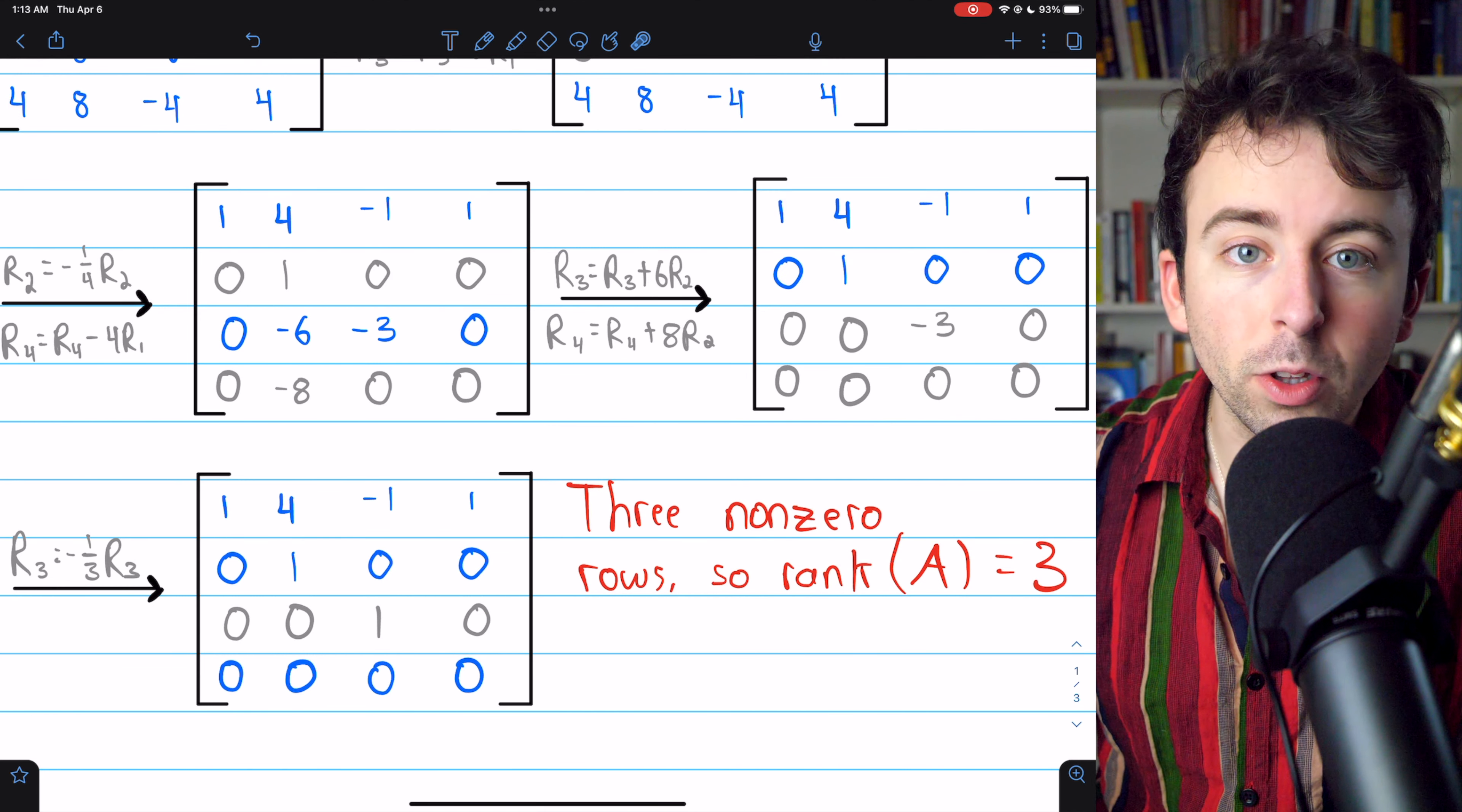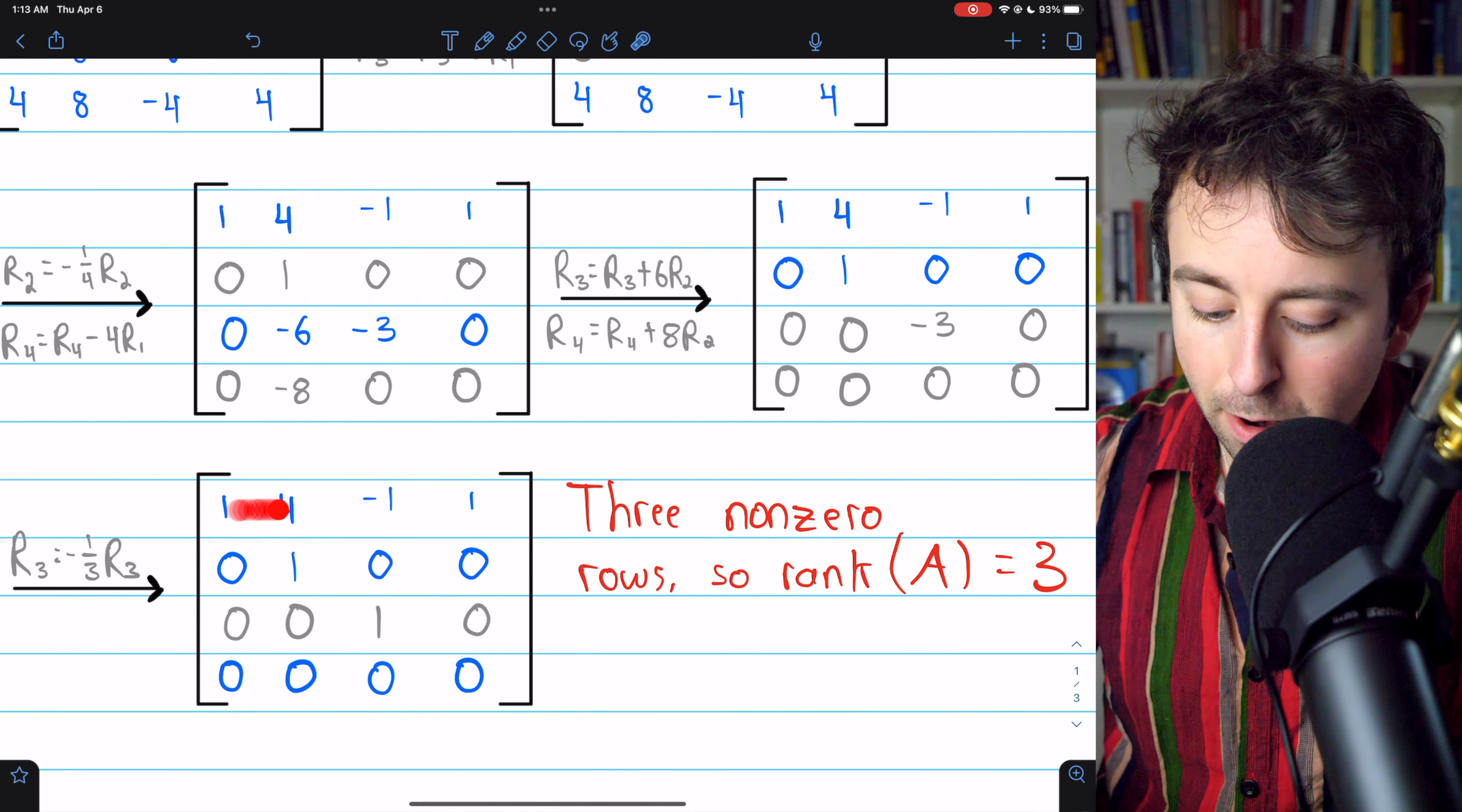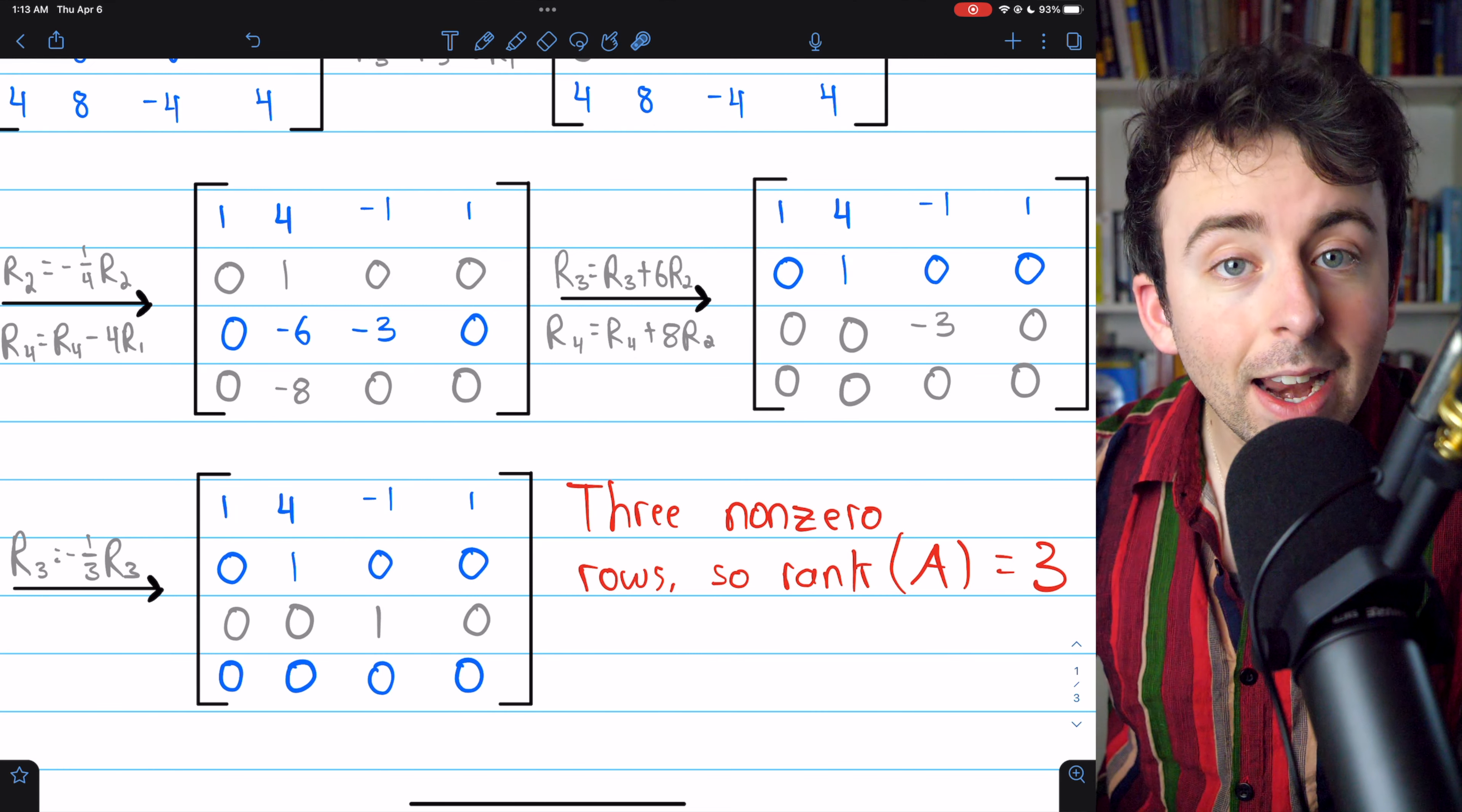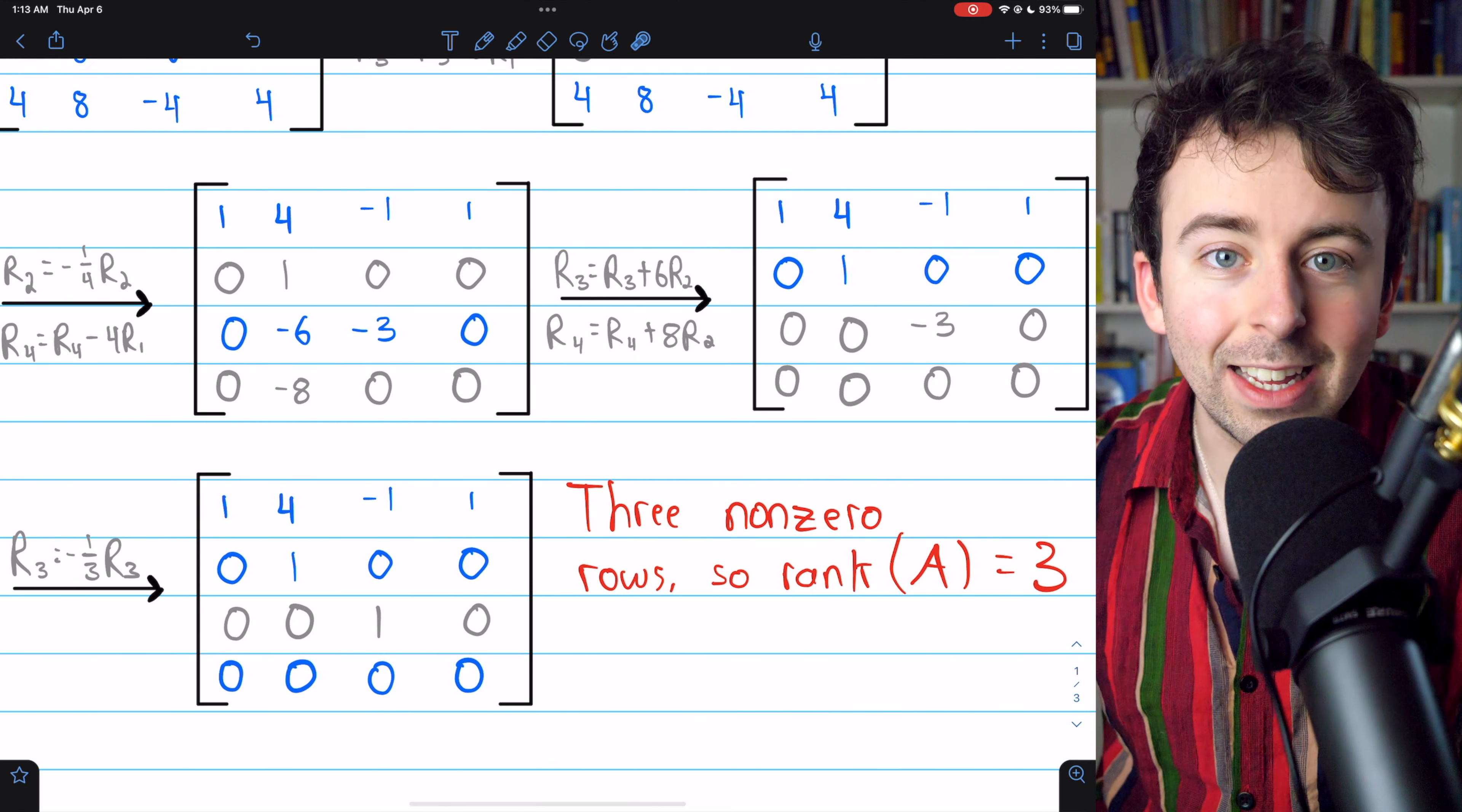Finally, the matrix is in row echelon form. And we see there are three non-zero rows. And thus, the rank of the matrix is three.